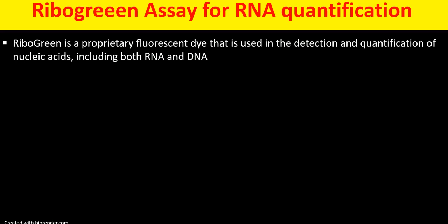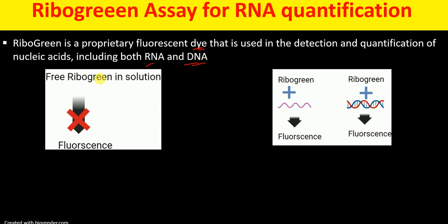RiboGreen is a proprietary fluorescent dye which stains both RNA as well as DNA. When RiboGreen is present freely in solution, it gives little to no fluorescence.